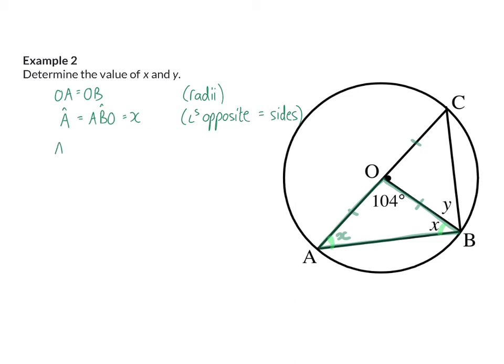I can say that angle A plus angle ABO plus angle AOB add up to 180 degrees. My reason: interior angles of a triangle, which means x + x + 104 = 180. Therefore, 2x = 76 degrees, which means x is 38 degrees.